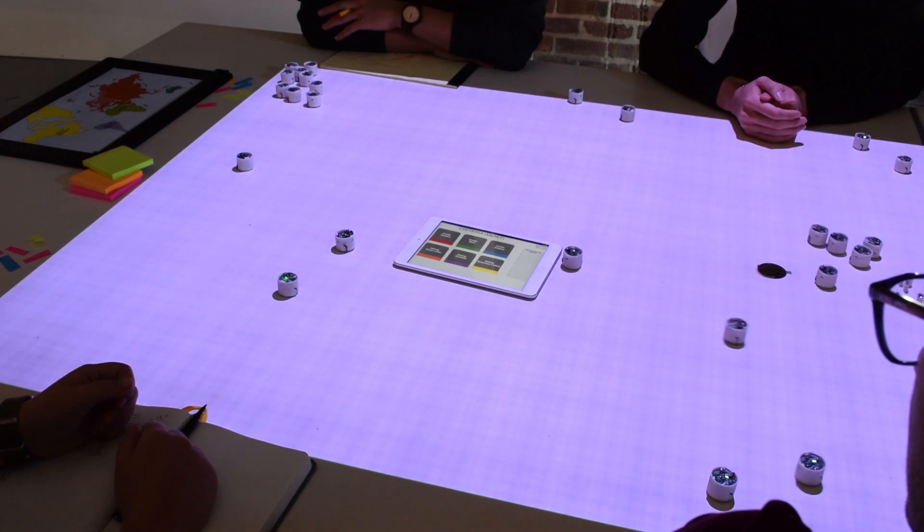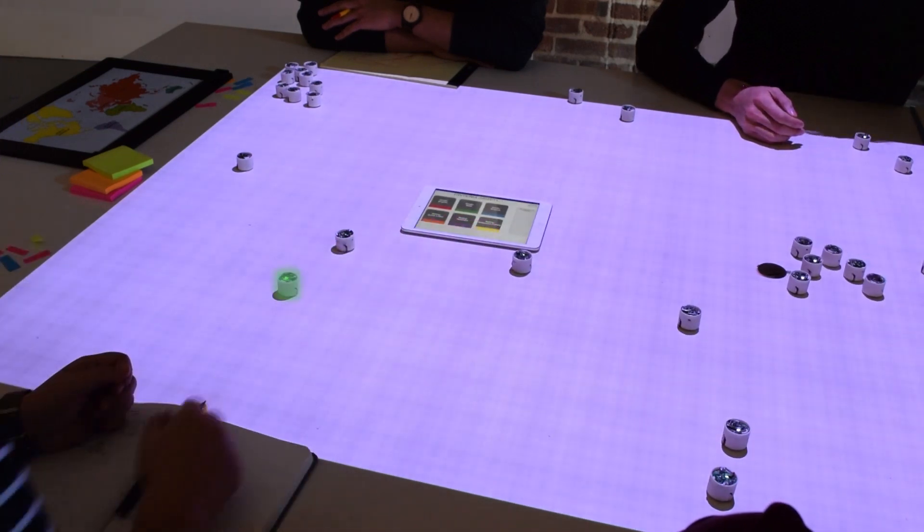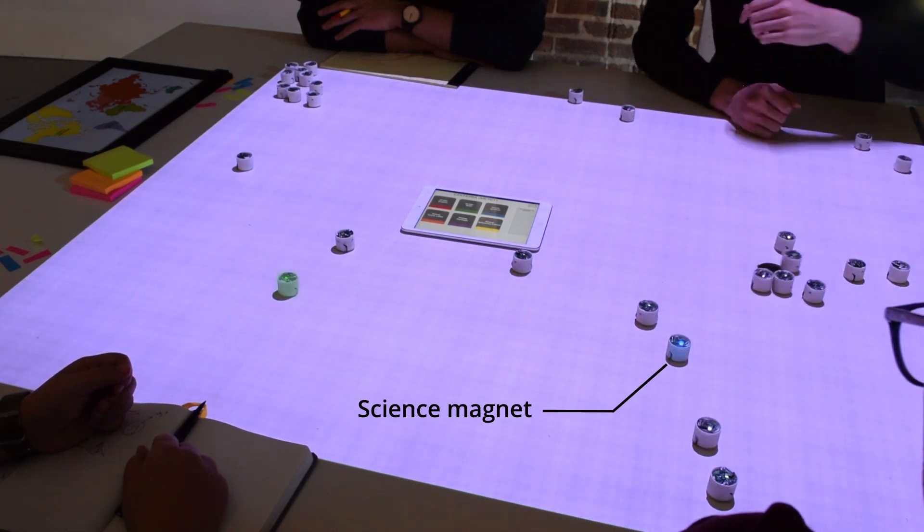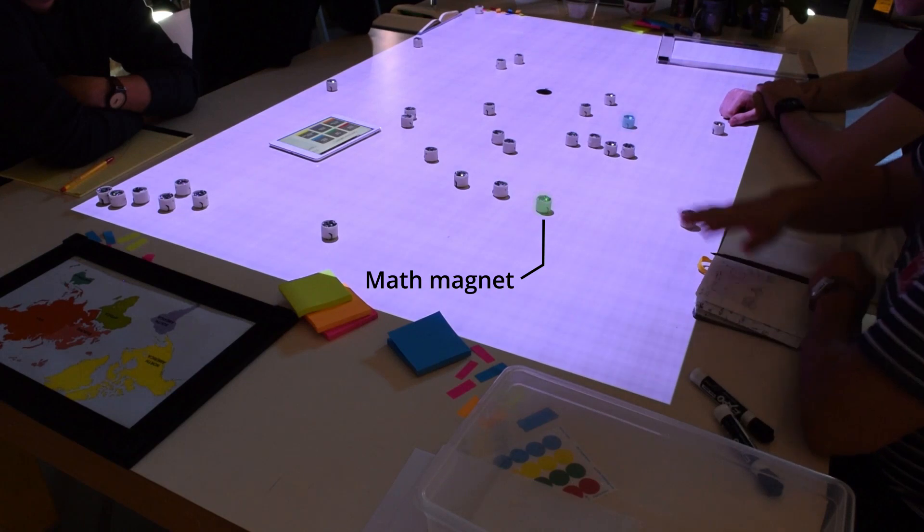Professors move the previous magnet to reconfigure the layout on the table. As students move to their new positions, the committee realizes that a group of four students has clustered in between both magnets.